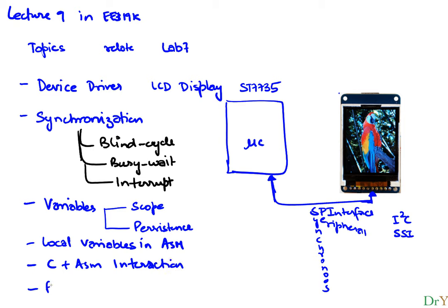Lastly, we will introduce the notion of fixed point representation. Our microcontroller has on board a piece of hardware called an FPU, which is distinct from our CPU. The FPU stands for floating point unit. The advantage of this unit is you can do floating point arithmetic right there on the board. The disadvantage is that if you engage it, it consumes power, which could drain our battery, so a lot of embedded systems disable this. Fixed point representation is a way to get the effect of floating point by using an integer representation.